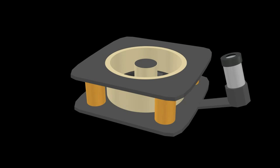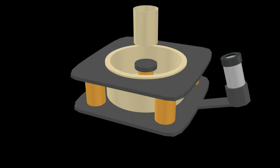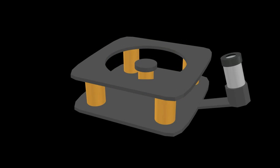A Hall-effect thruster consists of an anode located at the upstream end of a discharge channel of ceramic walls and of a xenon injector. An external cathode provides electrons to neutralize the ion beam.